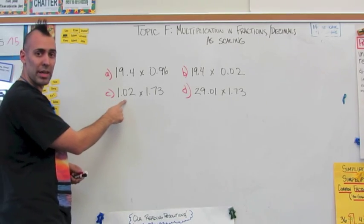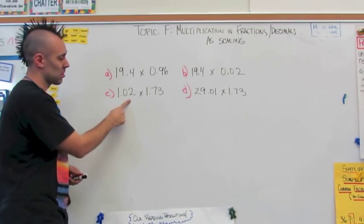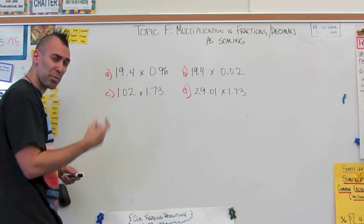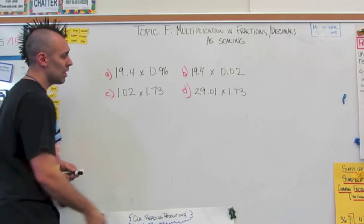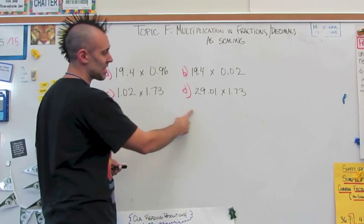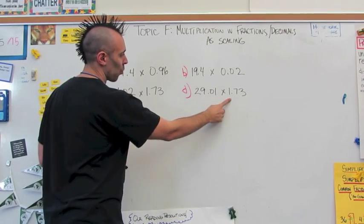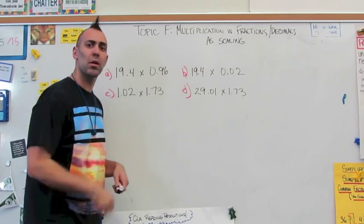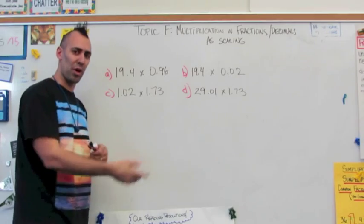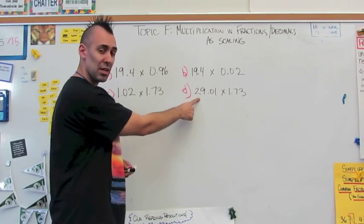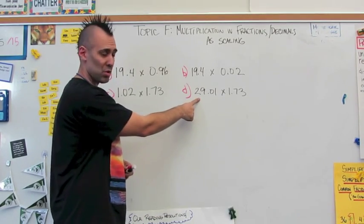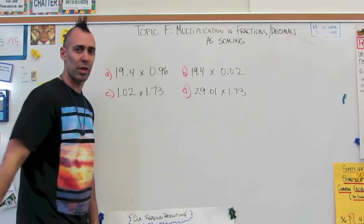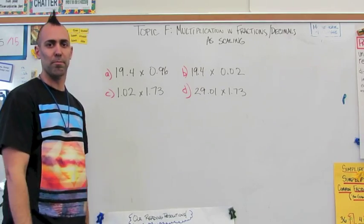For C, one and two hundredths is pretty close to one, just a little bit over. And in D, one and seventy-three hundredths is a little bit more than one, so the product is going to be more than twenty-nine point zero one.